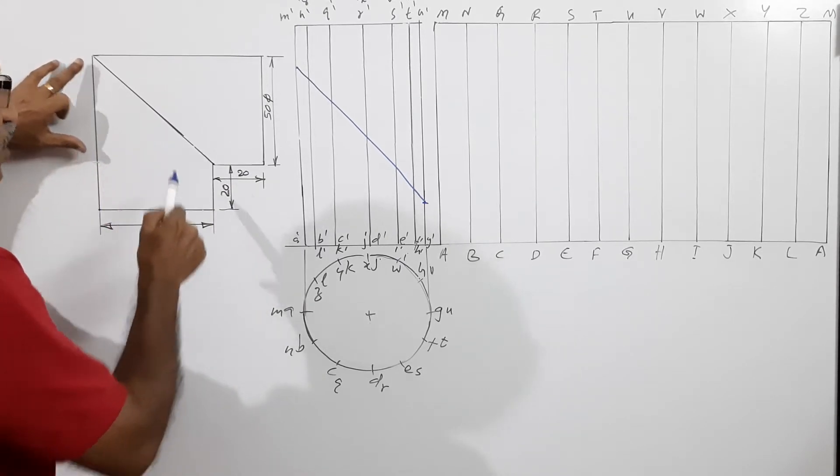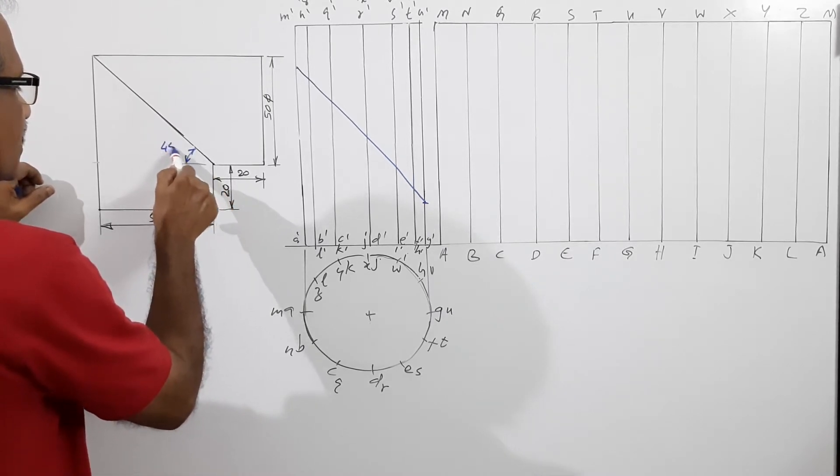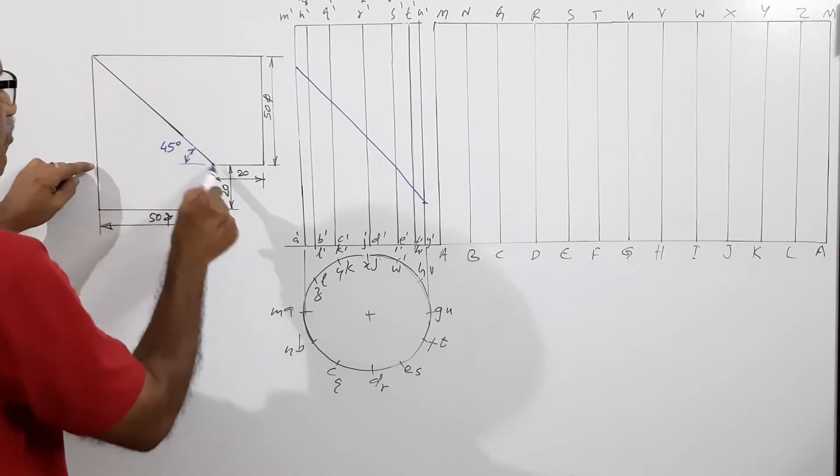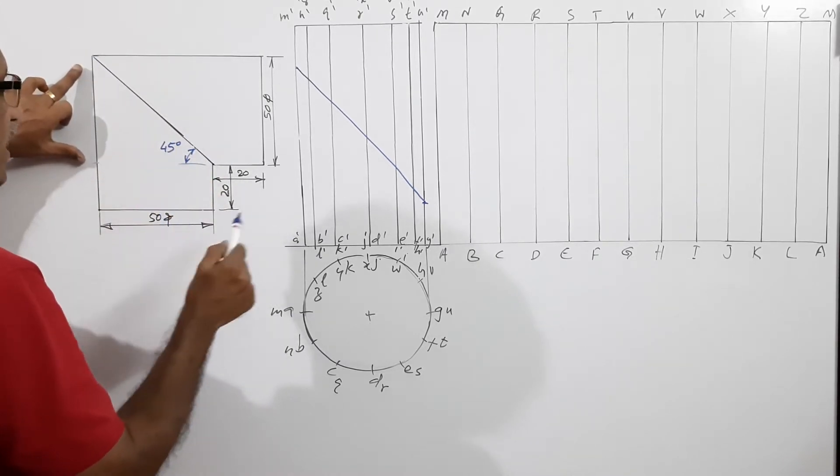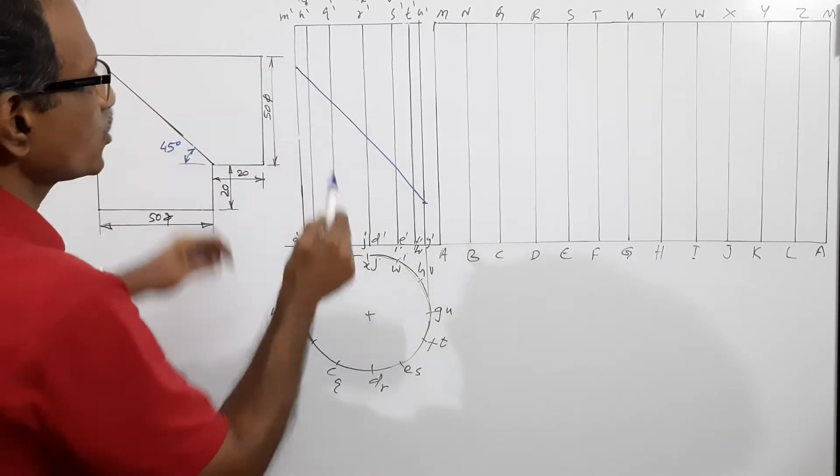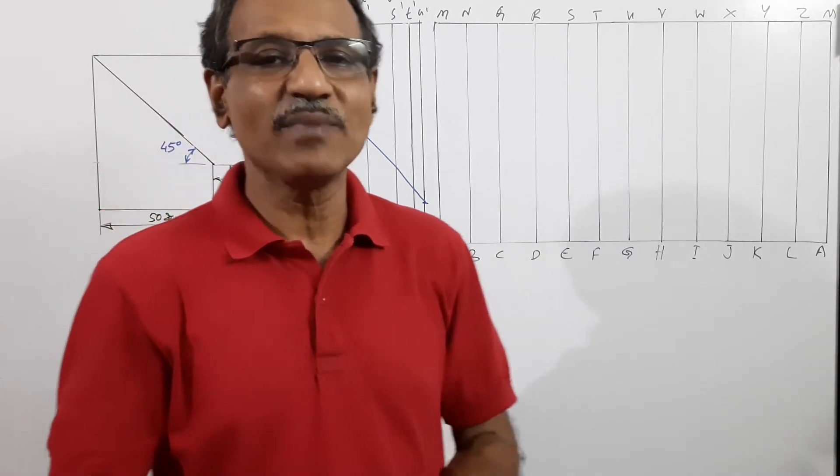This is 50. Because this angle is 45 degrees. This angle is 45 degrees. So this is 50. This is 50 for this to be 45 degrees. So 20 plus 50, 70 plus 20. Total height is 90. That is very important.